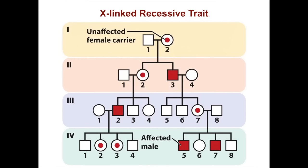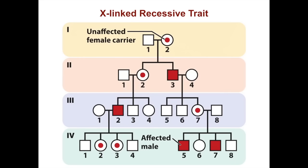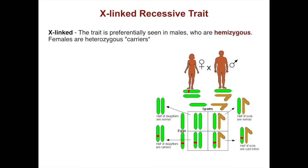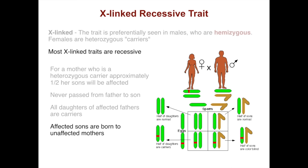This is what an X-linked recessive trait looks like on a pedigree. You have an unaffected female carrier in the first generation, and over time males are affected whereas females are just carriers. The trait is preferentially seen in males who are hemizygous, since they only have one X chromosome, and females can be heterozygous carriers. For a mother who is a heterozygous carrier, approximately half of her sons will be affected. These traits are never passed from father to son, and all daughters of affected fathers are carriers. One example is red-green colorblindness.